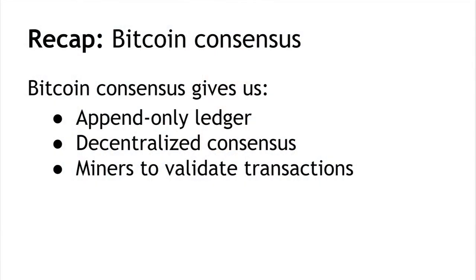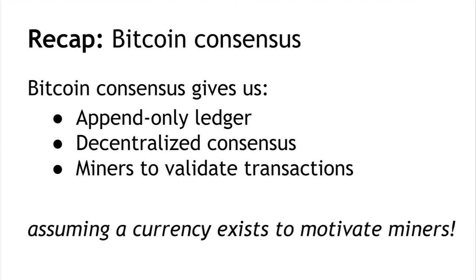To recap where we left off last time: the Bitcoin consensus mechanism gives us an append-only ledger — a data structure that we can only write to, and once data is written it's there forever. There's a decentralized protocol for establishing consensus about the value of that ledger. The miners who perform that protocol are validating transactions, making sure transactions are well-formed, that there aren't double spends, and that this thing can function as a currency. In this lecture we'll look at the details of how we actually build that currency to make the miners make this whole process happen.